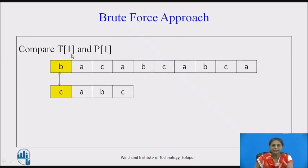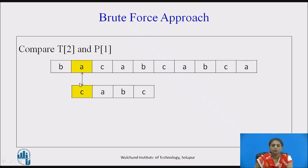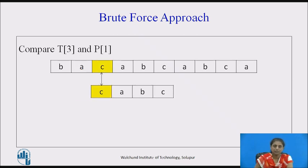Indexing starts at 1. The first character of the pattern is matched against the first character of the text — T[1] and P[1]. There is a mismatch, so we shift the window of the pattern to the right. The first character of the pattern is then matched with the second character of the text — again not matching, so we shift again. Now the third character of the text matches the first character of the pattern.